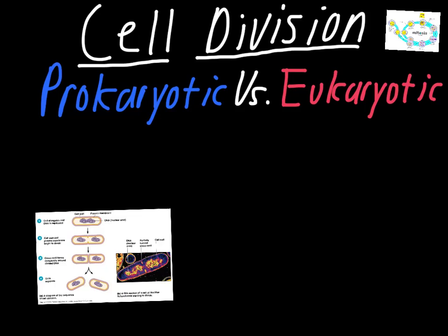This video is about the difference between cell division in prokaryotic and eukaryotic cells. Prokaryotic cells are simpler things like bacteria that don't have a defined nucleus and don't have defined organelles aside from the ribosome, whereas eukaryotic cells are more complex things like the cells in plants, animals, and fungus. We're going to be focused on cell division in eukaryotic cells, but in order to appreciate the complexities of this, we have to look at the way it works in prokaryotic cells as well.